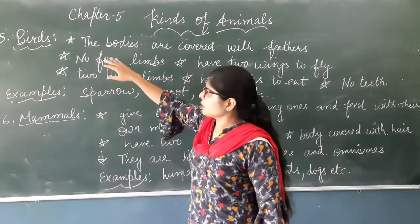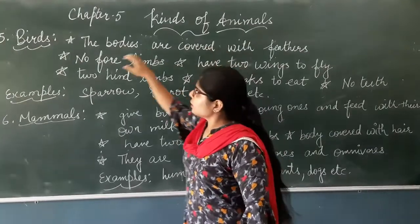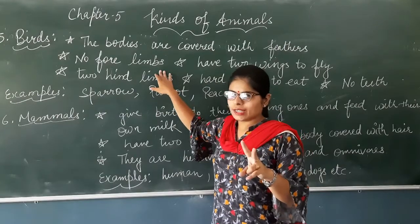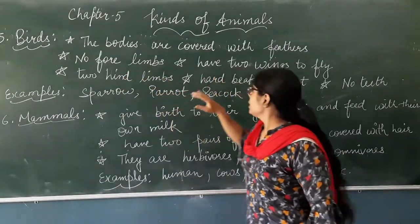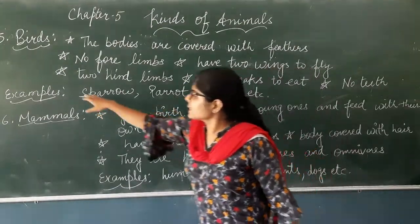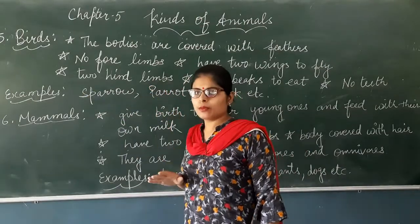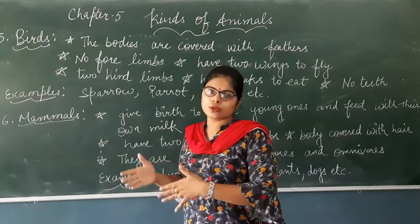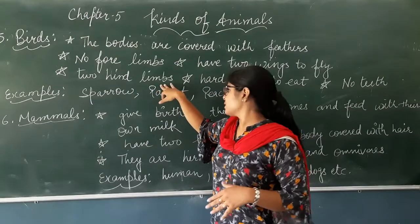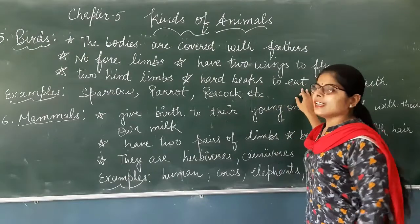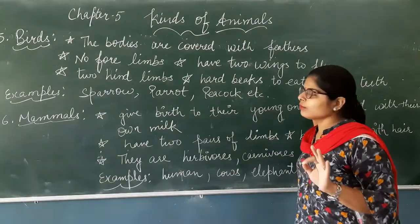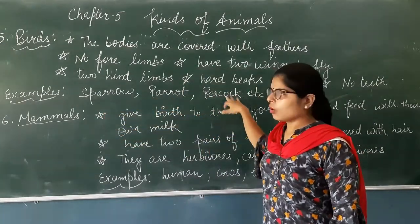The fifth type is birds. Birds' bodies are covered with feathers. They do not have four limbs like other animals; instead, they have two wings that help them fly and two hind limbs or legs for walking or jumping. Birds have hard beaks for eating and have no teeth. Examples include sparrows, parrots, and peacocks.